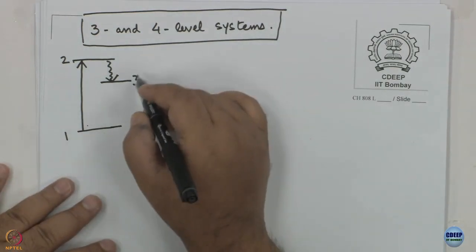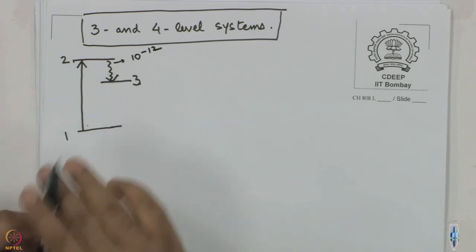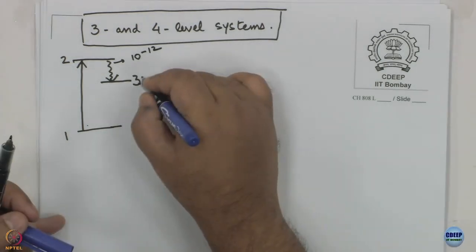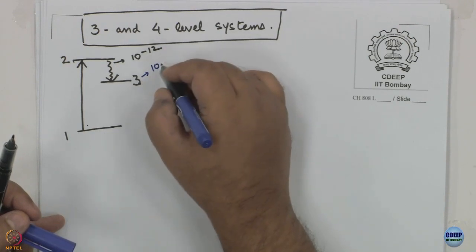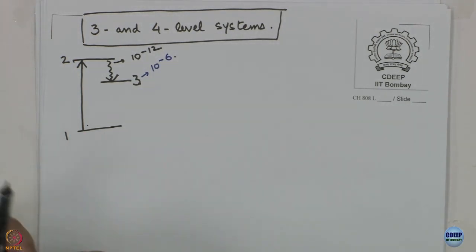Let us say this process takes place in a few femtoseconds or picoseconds, and state number three has a lifetime of, say, a microsecond. How many picoseconds are there in a microsecond? 10 to the power 6. So before a molecule can come down from level 3 to level 1, a large population of level 3 can actually be built up.